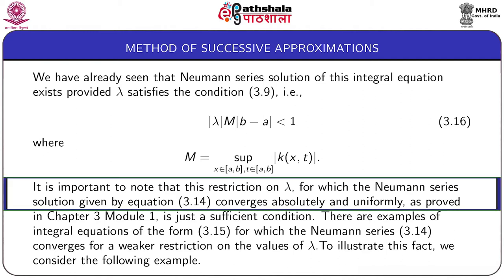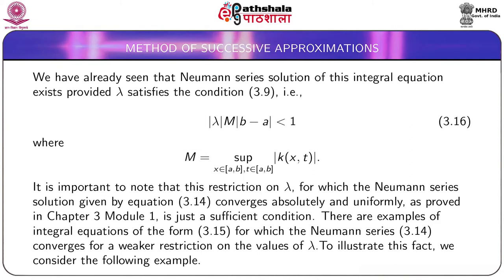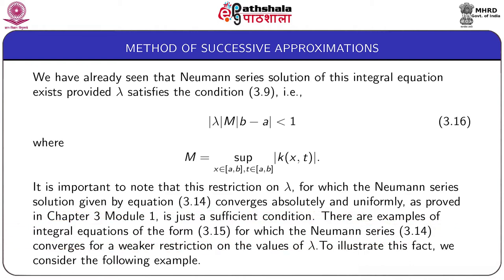The restriction on λ as given by equation 3.16, for which the Neumann series solution converges absolutely and uniformly as proved in the previous module, is just a sufficient condition. There are examples of integral equations of the form 3.15 for which the Neumann series converges for a weaker restriction on λ. We shall illustrate this fact by considering the following example.